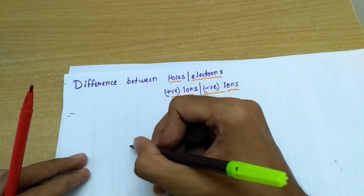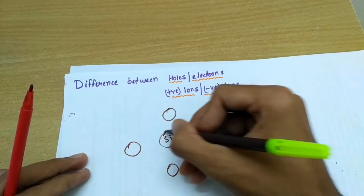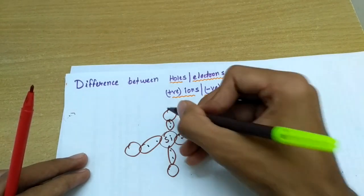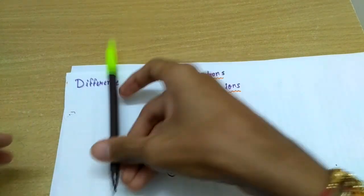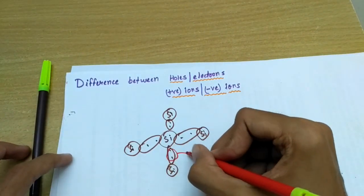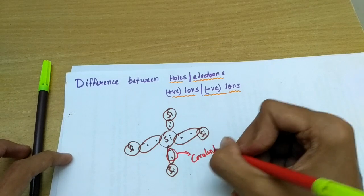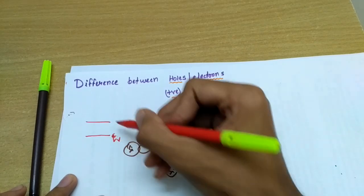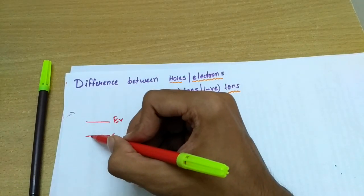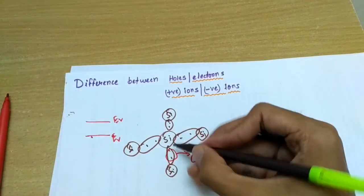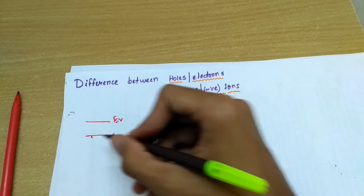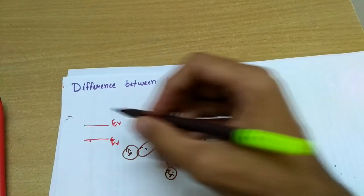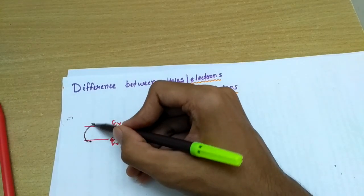As we all know, silicon has four electrons in its outermost orbit, so they share them and make covalent bonds. These silicon atoms share electrons to form covalent bonds. We represent this with a valence band and a conduction band. The electrons in the valence band are not free because they are bonded by the covalent bond.